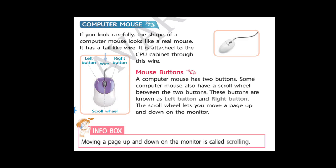The scroll wheel lets you move a page up and down on the monitor. See, here is a wire attached to the mouse which connects it with the CPU. Here is the left button and this is the right button, and the scroll wheel. Moving a page up and down on the monitor screen is called scrolling, which means rotating.